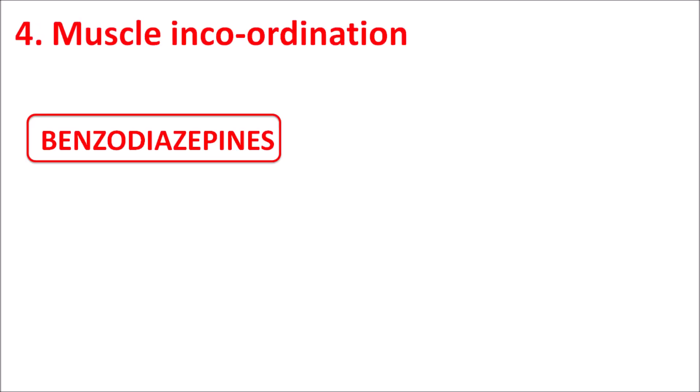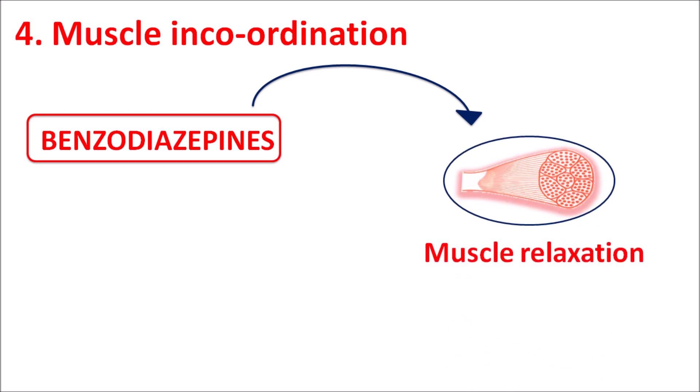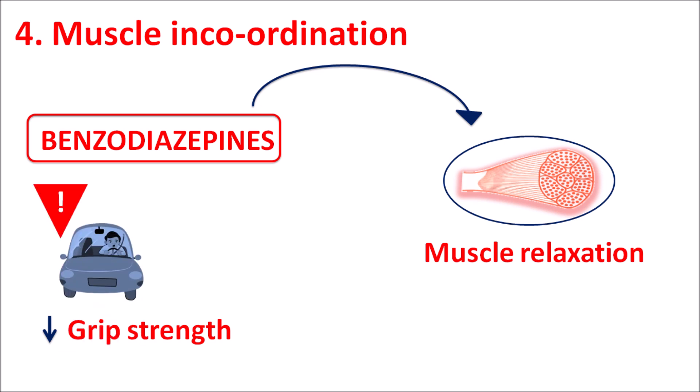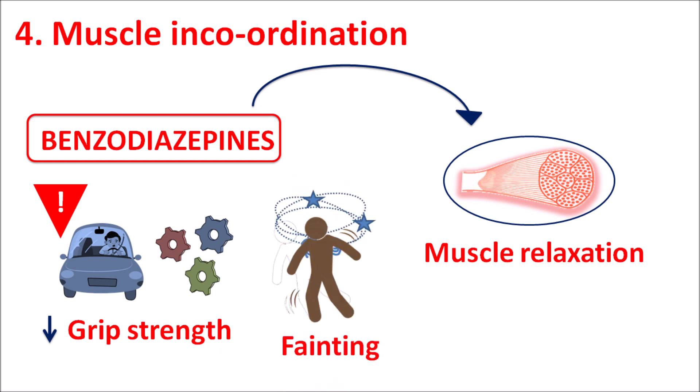The fourth side effect is muscle incoordination. Benzodiazepines open chloride channels resulting in hyperpolarization, so they can centrally produce muscle relaxation, which results in muscle incoordination and decreased grip strength. This muscle incoordination along with sedation can impair activities — caution should be taken when driving or working with machinery due to risk of accidents. Benzodiazepines are therefore taken at night time to reduce this risk, but they can also cause imbalance and fainting.